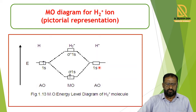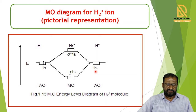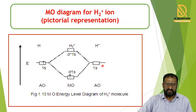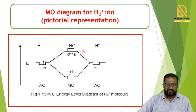The 1s atomic orbital of the first hydrogen and the 1s atomic orbital of the second hydrogen have the same wave functions, leading to the formation of the bonding molecular orbital sigma 1s. When the wave functions are different, an antibonding molecular orbital is formed, denoted sigma star 1s. So two atomic orbitals combine to form two molecular orbitals: sigma 1s and sigma star 1s.